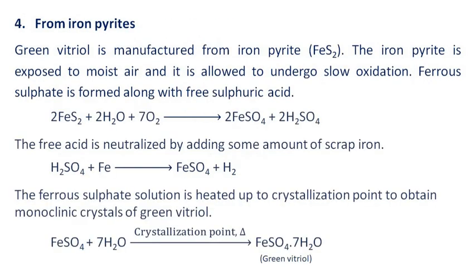From iron pyrites: green vitriol is manufactured from iron pyrite FeS₂. The iron pyrite is exposed to moist air and allowed to undergo slow oxidation, and ferrous sulfate is formed along with free sulfuric acid. The free acid is neutralized by adding some amount of scrap iron. The ferrous sulfate solution is then heated up to crystallization point to obtain monoclinic crystals of green vitriol.